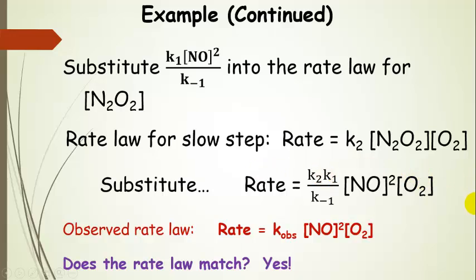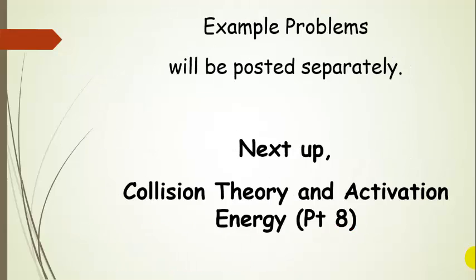Comparing to the experimental rate law: in real life we can't separate out all the individual rate constants — they are multiplied together and observed experimentally as a single observed rate constant K_obs. So our derived rate law matches the observed rate law because K_obs corresponds to K₁K₂/K₋₁, and the reactant dependence — [NO]²[O₂] — matches exactly. Therefore this mechanism could be correct. Next we will talk about collision theory and activation energy.